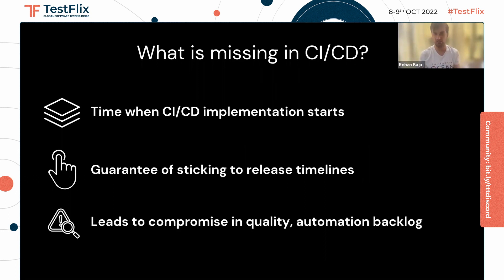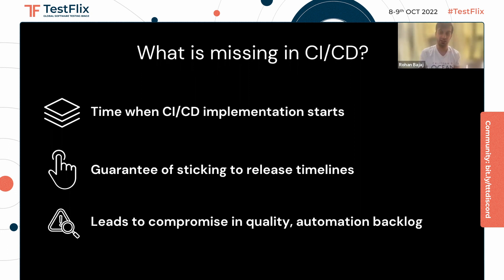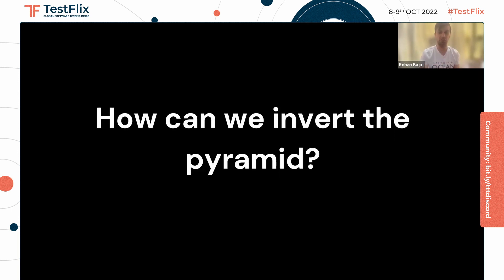Now what exactly is the missing piece? We covered continuous integration and continuous deployment, but do we know what is missing here? One of the major missing pieces is the time when the CI/CD implementation starts. It normally starts pretty late in the cycle, which leads to a lot of risk in terms of bugs being caught late in the release cycle, causing the release itself to be delayed. This also leads to compromise in quality and a lot of automation backlog. Ideally, automation of the feature being developed should be done in the same sprint or before the release. But due to bugs being caught late, automation is frequently paused and more focus is given to manual testing, leading to a growing automation backlog. So how exactly can we fix this? That's where we're talking about inverting the pyramid.